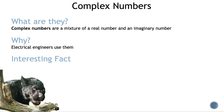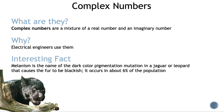Interesting fact: melanism is the name of the dark color pigmentation mutation in a jaguar or leopard that causes the fur to be blackish. It occurs in about 6% of the population.